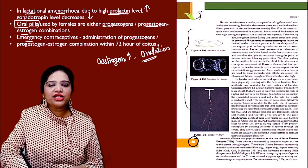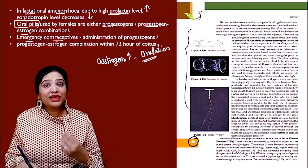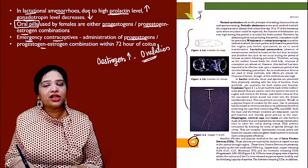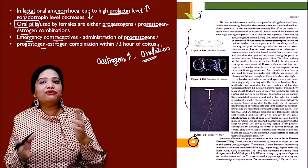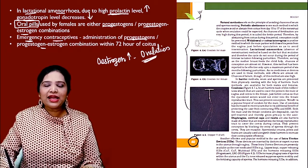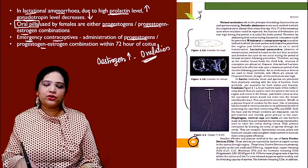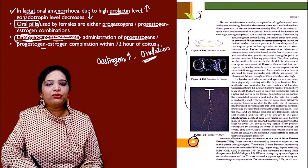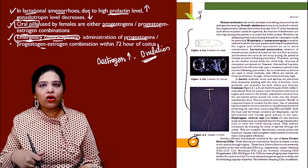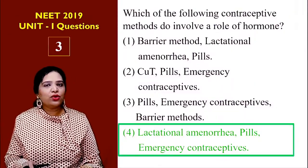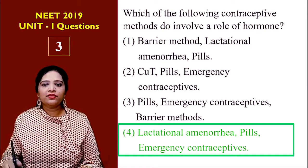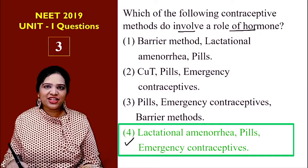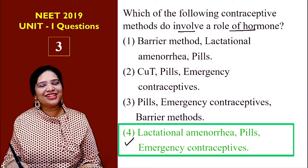Similarly, emergency contraceptive pills consist of progesterone or a progesterone-estrogen combination, taken within 72 hours after coitus — after sexual intercourse. This also has the same role, but taken as an emergency after sexual intercourse. So in all three methods — lactational amenorrhea, oral pills, and emergency contraceptives — they all have hormonal control. The answer is number four: lactational amenorrhea, pills, and emergency contraceptive.